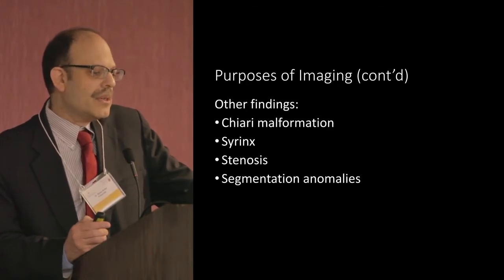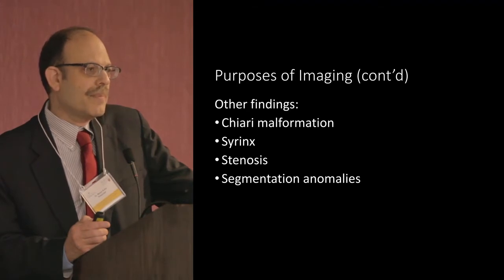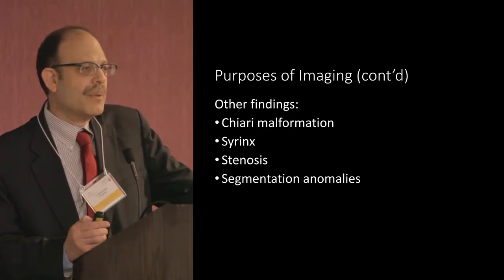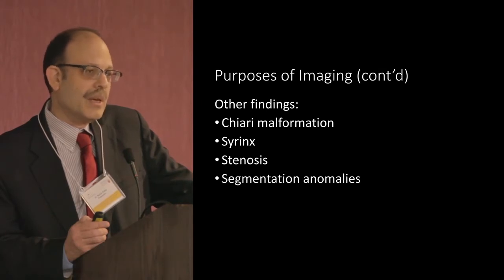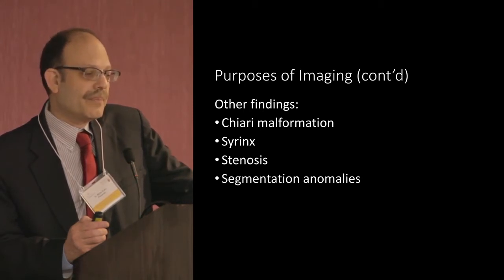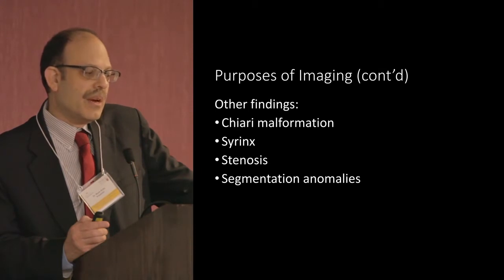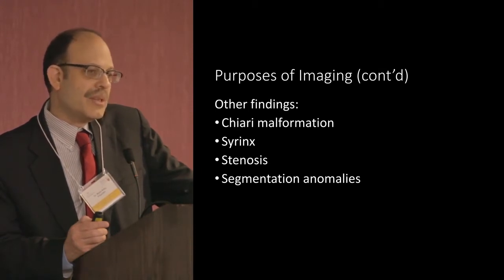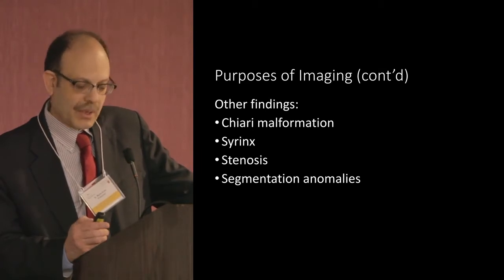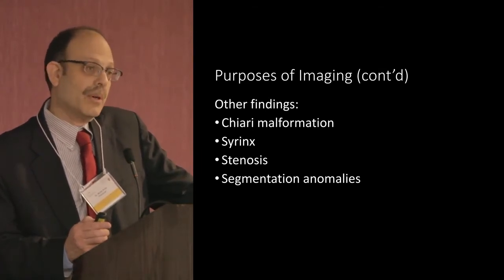Other conditions that may cause neurologic issues, problems with pain, and problems with function include Chiari malformation — the lower part of the brain coming through the skull base with compression of the brain stem and cerebellum — syrinx, which is fluid; stenosis, which is narrowing; and segmentation abnormalities, where the bones in the spine don't form properly early in life.